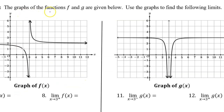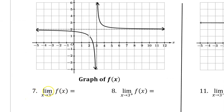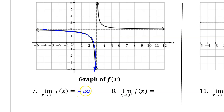The graphs of the functions f and g are given below. Use the graphs to find the following limits. For number 7, let's find the limit as x approaches 3 from the left of f of x. At x equals 3, we have a vertical asymptote, so this limit will be either positive infinity or negative infinity. As we approach the asymptote from the left, f of x is approaching negative infinity. So this limit is negative infinity.